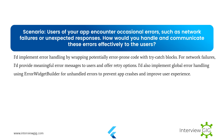Scenario: your app encounters errors, such as network failures. How would you handle and communicate these errors effectively to the users? I'd implement error handling by wrapping potentially error-prone code with try-catch blocks. For network failures, I'd provide meaningful error messages to users and offer retry options. I'd also implement global error handling using ErrorWidgetBuilder for unhandled errors, to prevent app crashes and improve user experience.